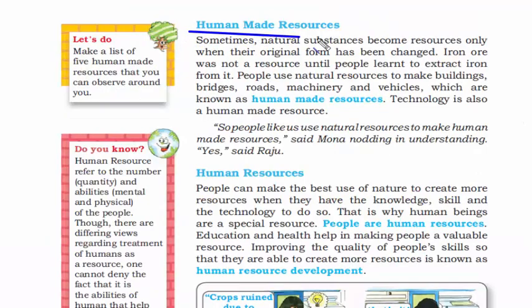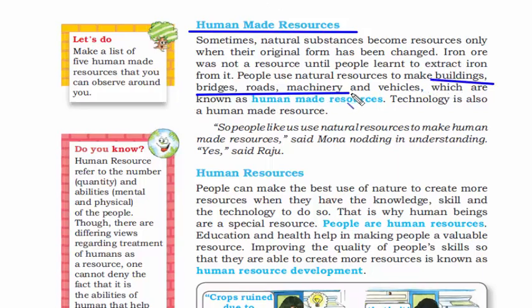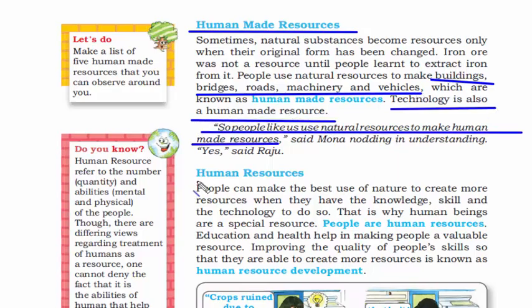Now let's read about human-made resources. By the name, it is evident that these are resources made by humans. Though the raw materials are acquired from nature, they are purely made by humans. Examples include buildings, bridges, roads, machinery, and vehicles. Technology is also a human-made resource.